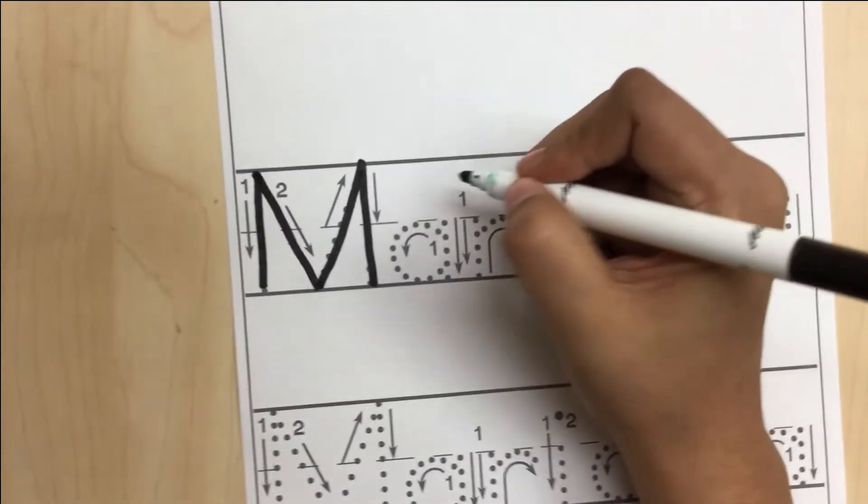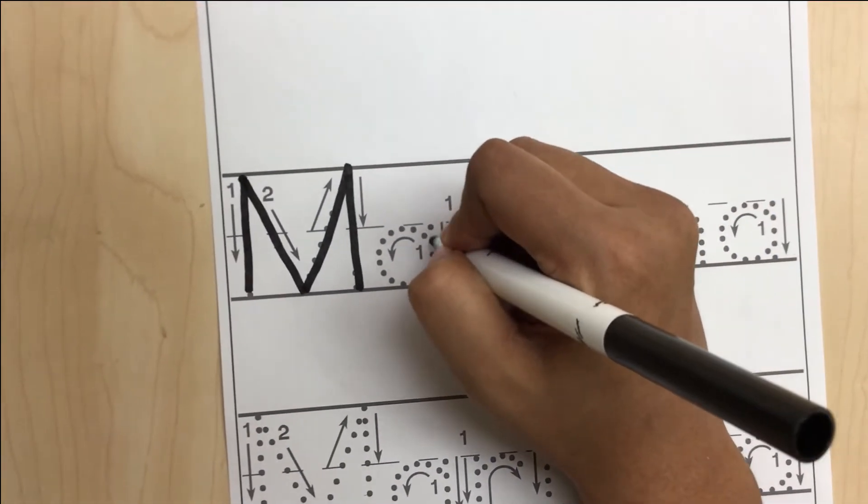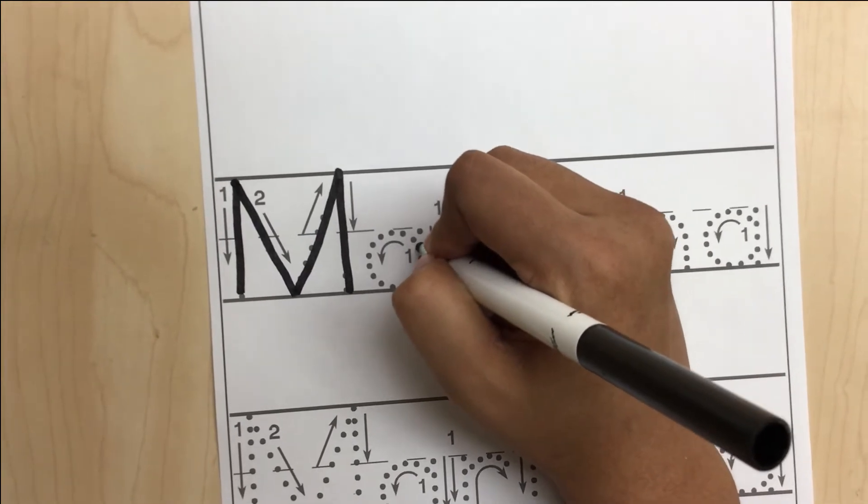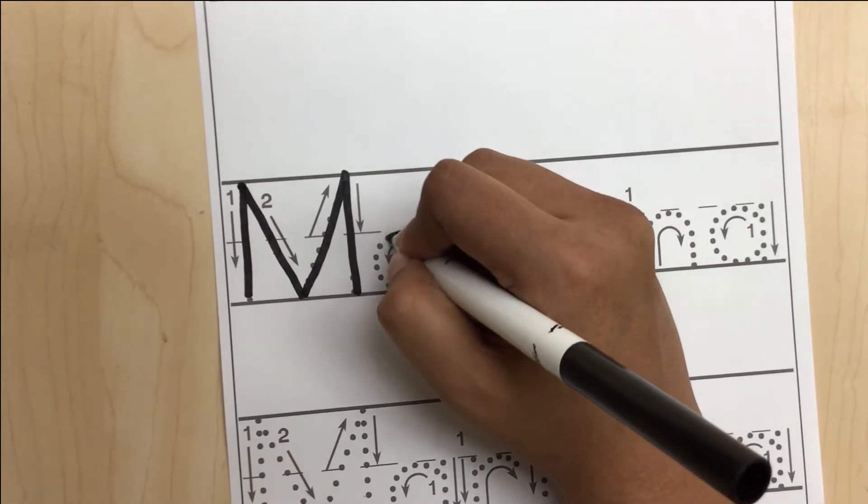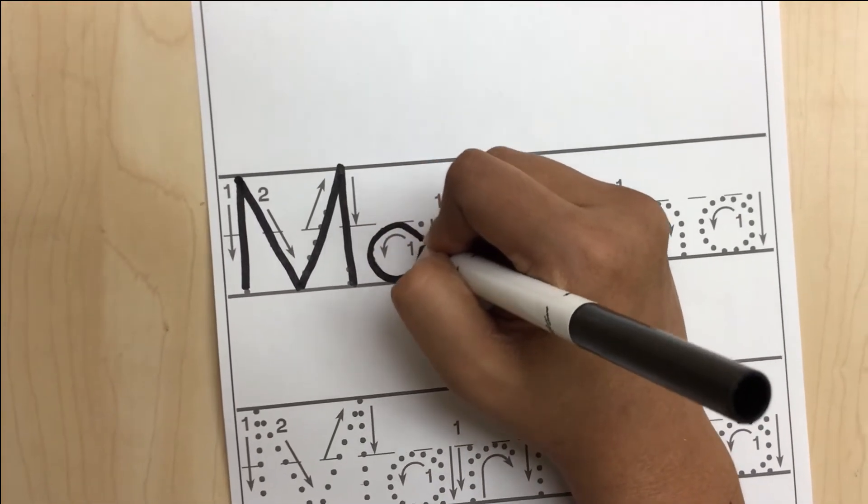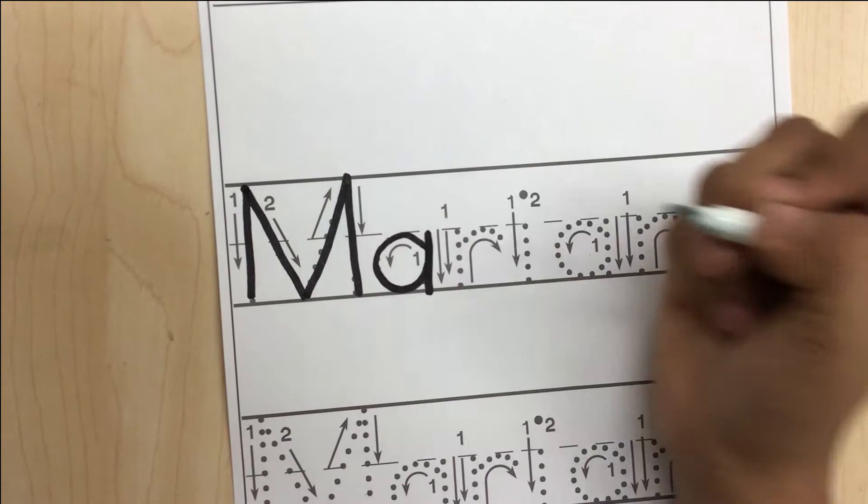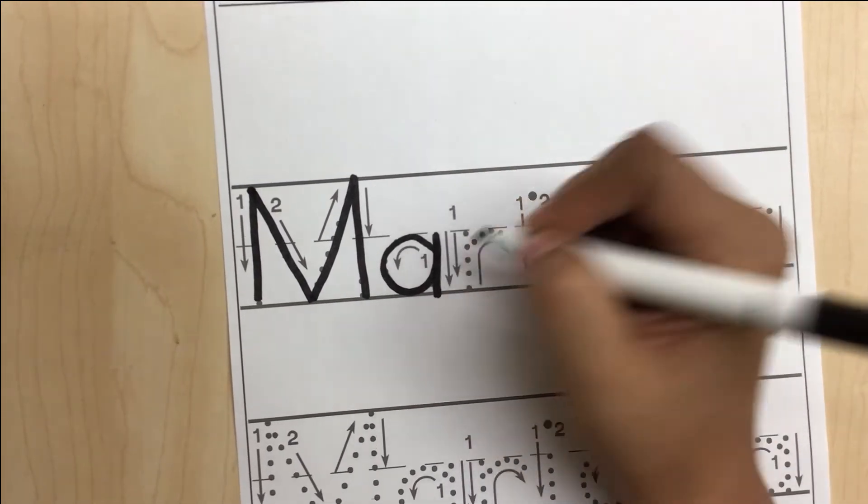For letter A, we are going to start here and follow the arrow. Can you see number one and the arrow? You're going to follow it. You're going to make a circle and down. Here's the other arrow.